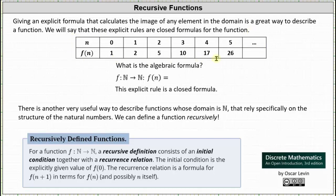Analyzing the table below, let's see if we can determine the algebraic formula for the function. It may take some time, but in this case we can define the function f, which maps the set of natural numbers to the set of natural numbers, as f(n) = n² + 1, which means we take the input, square it, and add one to get the corresponding output. This explicit rule is called a closed formula.